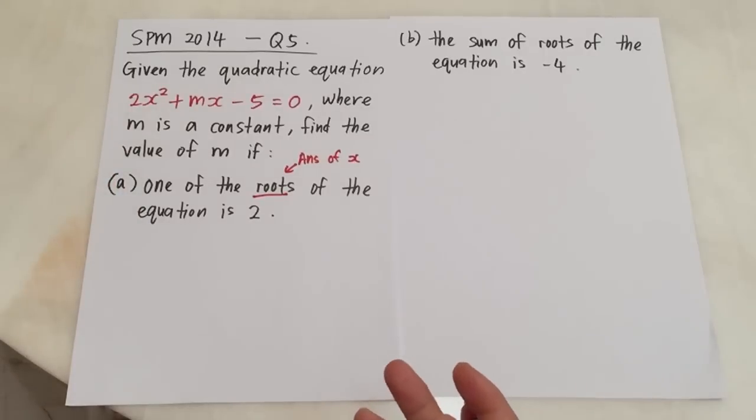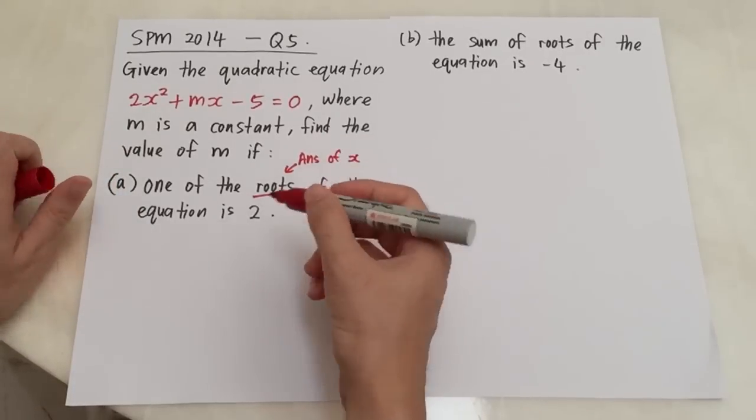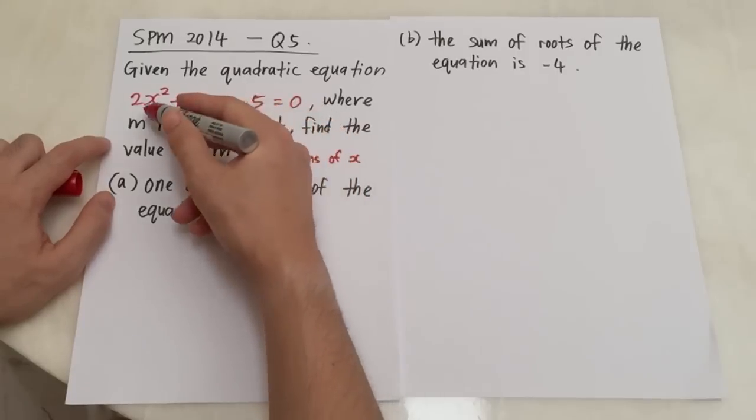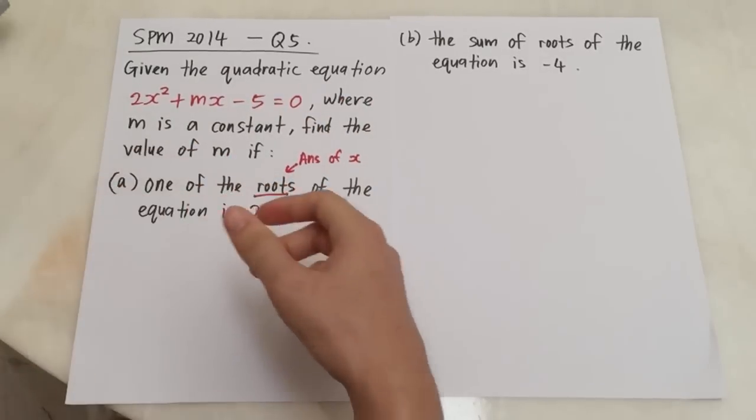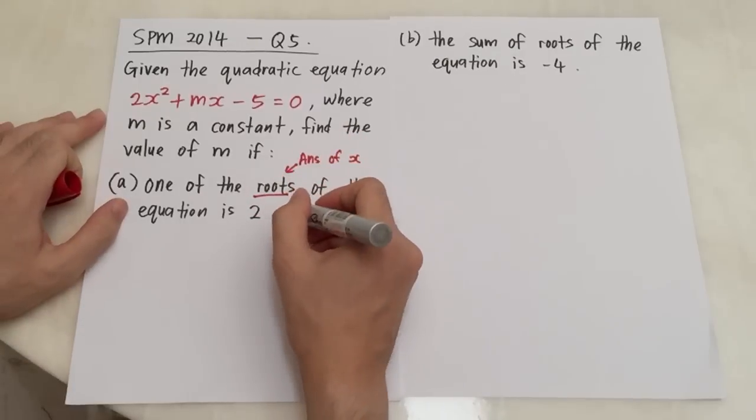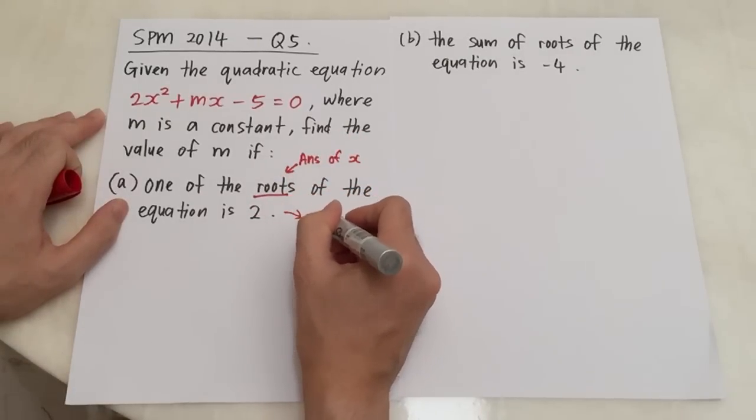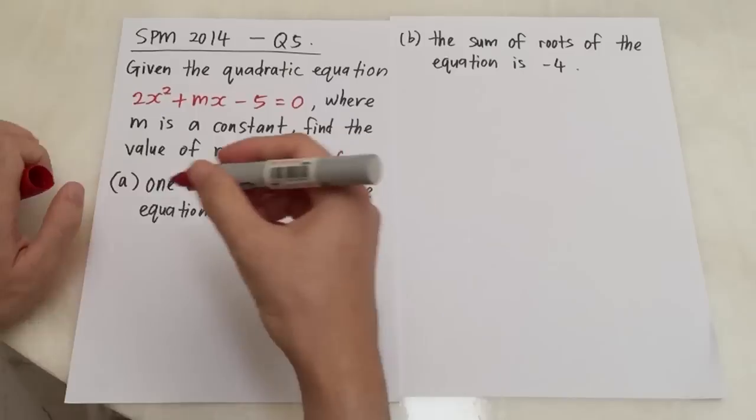So find the values of m if one of the roots of the equation is 2. I say many times in my video, the meaning of root over here means the answer for x. One of the x answers here is 2. You must understand this.